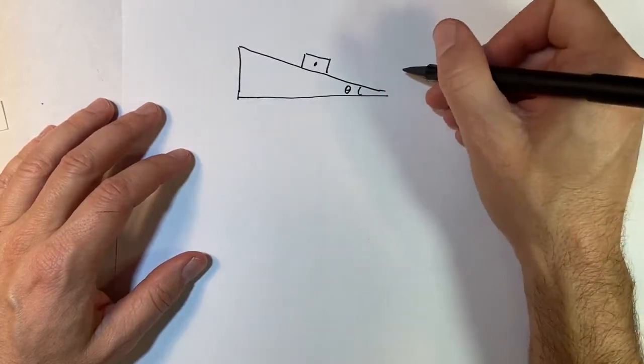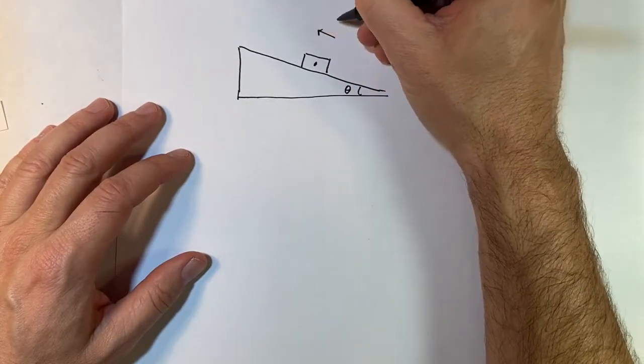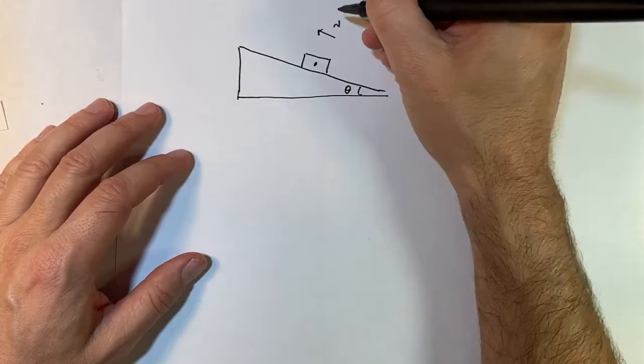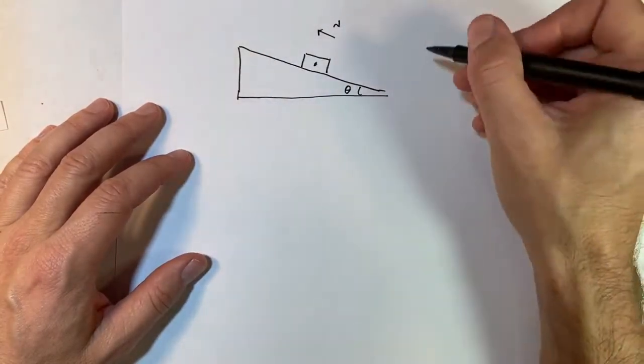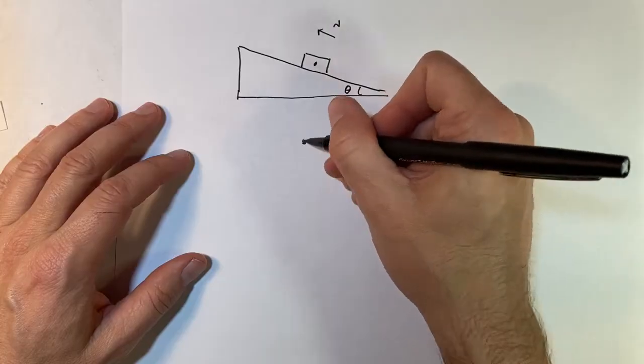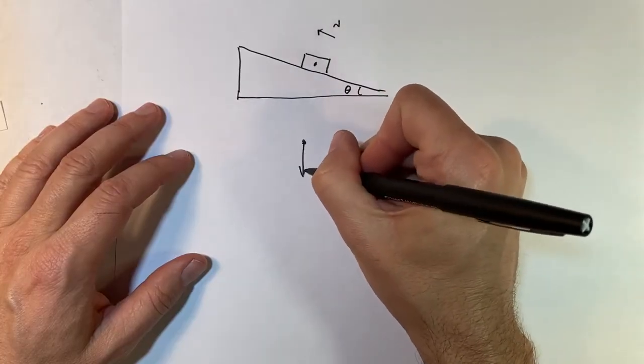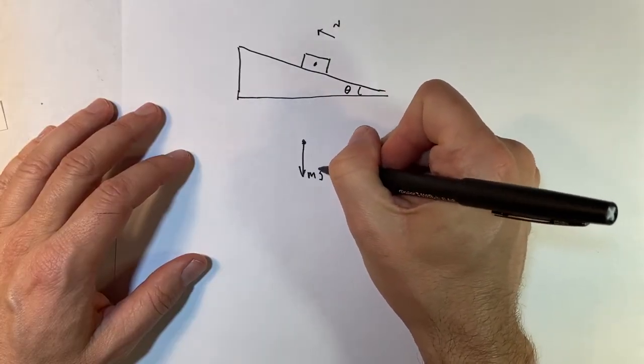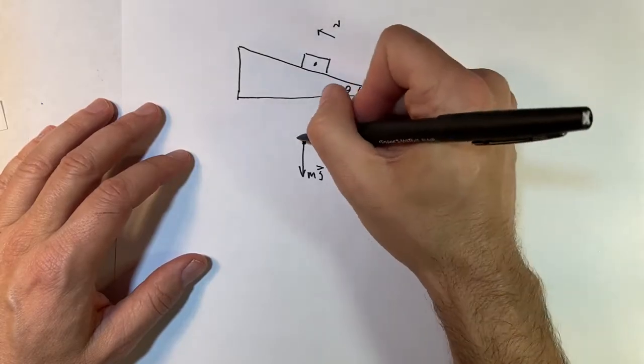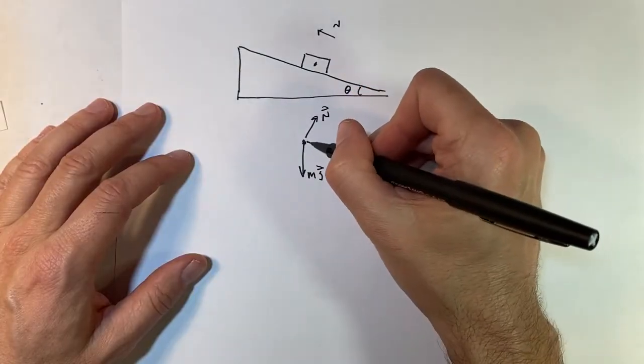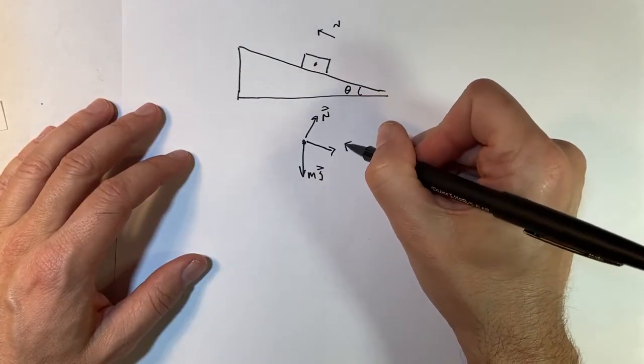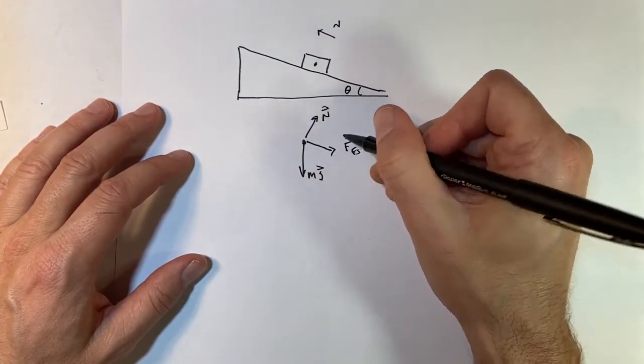Okay, so we have the same force diagram before. In this case, it's moving up. That's the direction of the velocity. And so we have kinetic friction in this case. So if I draw the force diagram, it's going to look like this. Mg, normal force. Now it's moving up, so friction is actually down the plane.